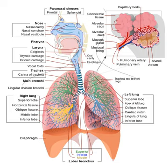Some of the diplura have eleven spiracles, with four pairs on the thorax, but in most of the ancient forms of insects, such as dragonflies and grasshoppers, there are two thoracic and eight abdominal spiracles. However, in most of the remaining insects there are fewer. It is at the level of the tracheoles that oxygen is delivered to the cells for respiration.